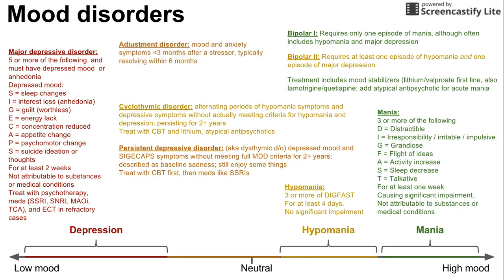One more disorder to discuss is adjustment disorder — when you have symptoms of depression and anxiety within three months of a stressor or major life event. These symptoms must start within three months of the stressor and typically resolve within six months. In adjustment disorder, you don't meet the full criteria for major depressive disorder or generalized anxiety disorder. Treatment is supportive therapy, and medications may be considered for associated symptoms like insomnia or nausea.